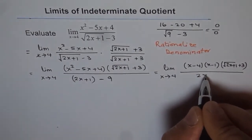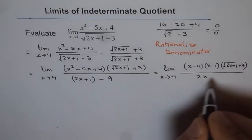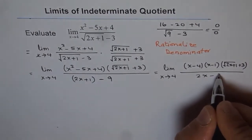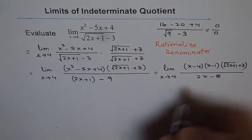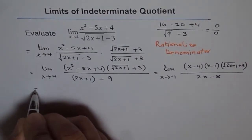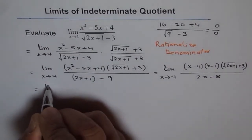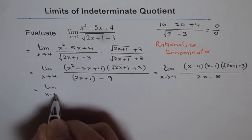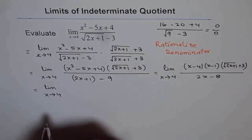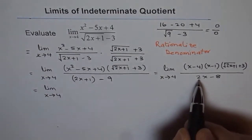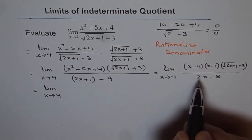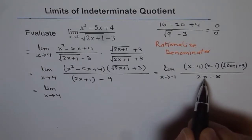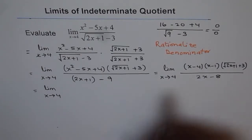Opening the denominator bracket gives us 2x minus 8. We can factor 2 out, getting 2 times x minus 4.